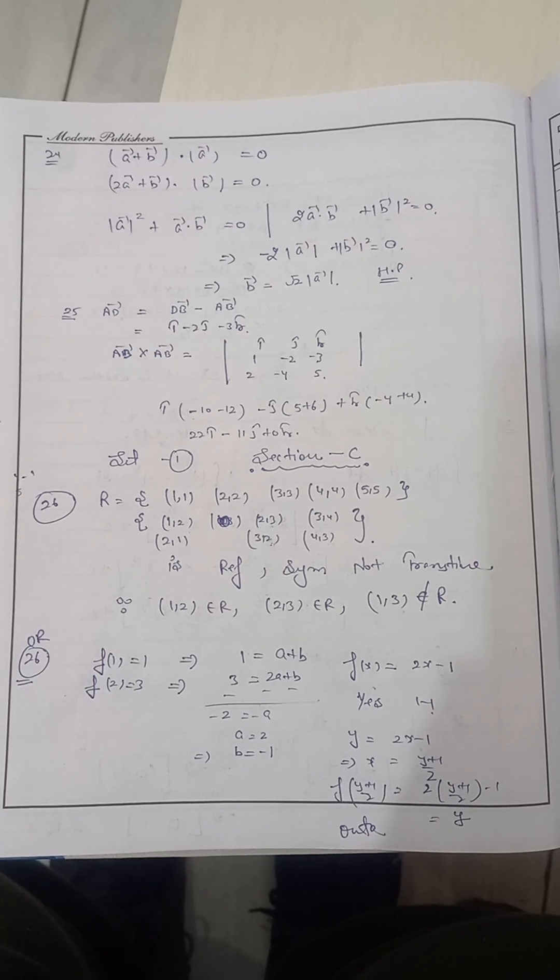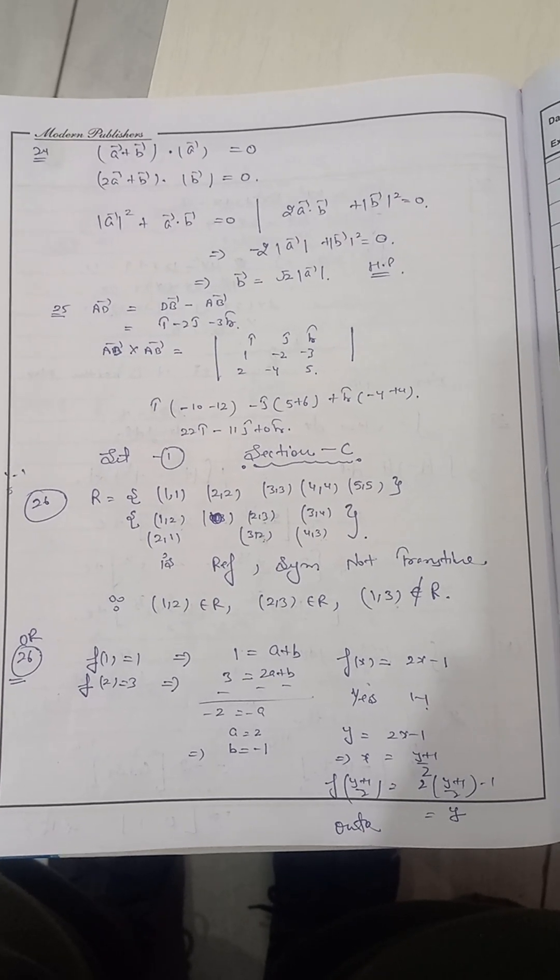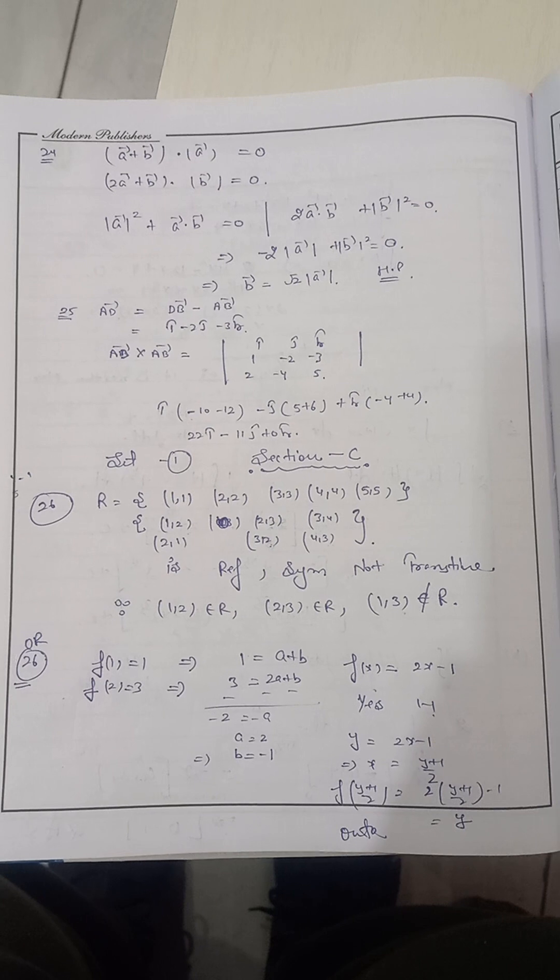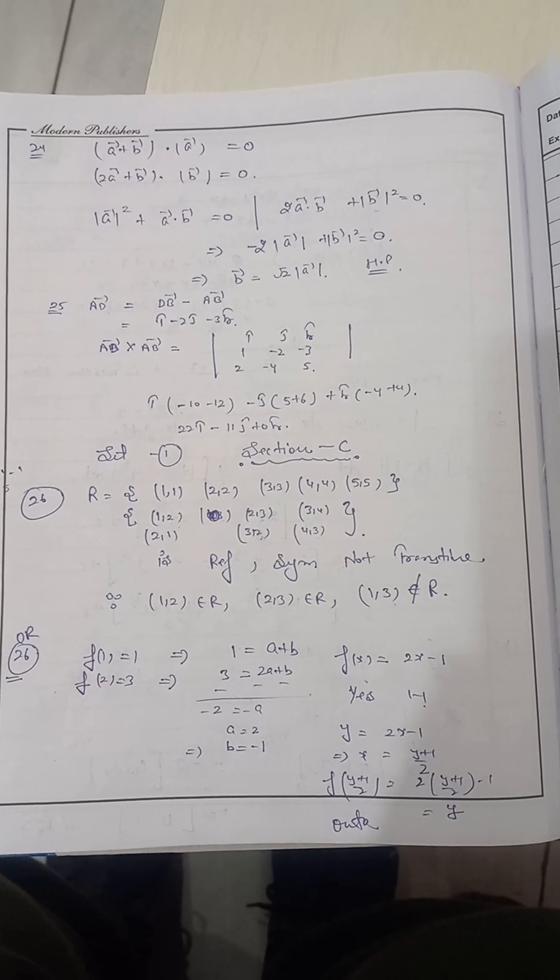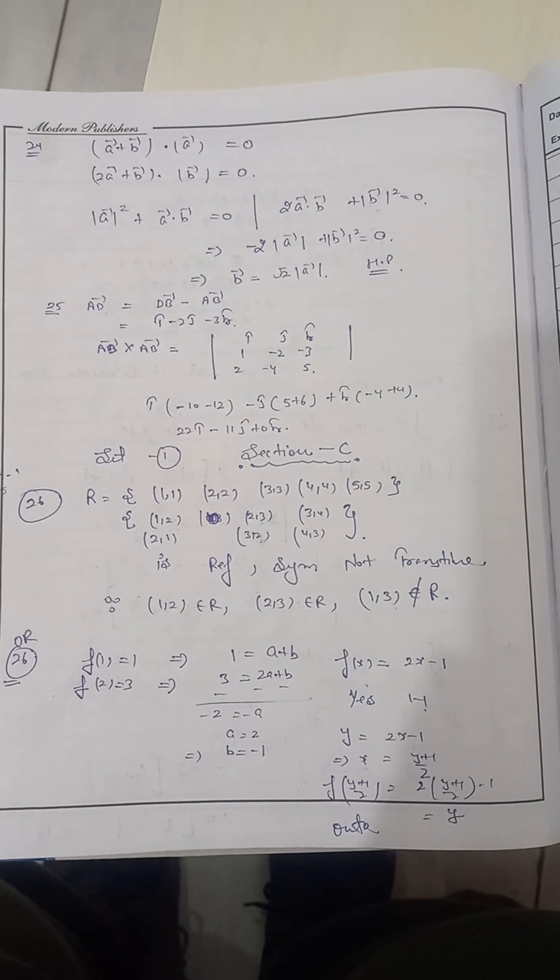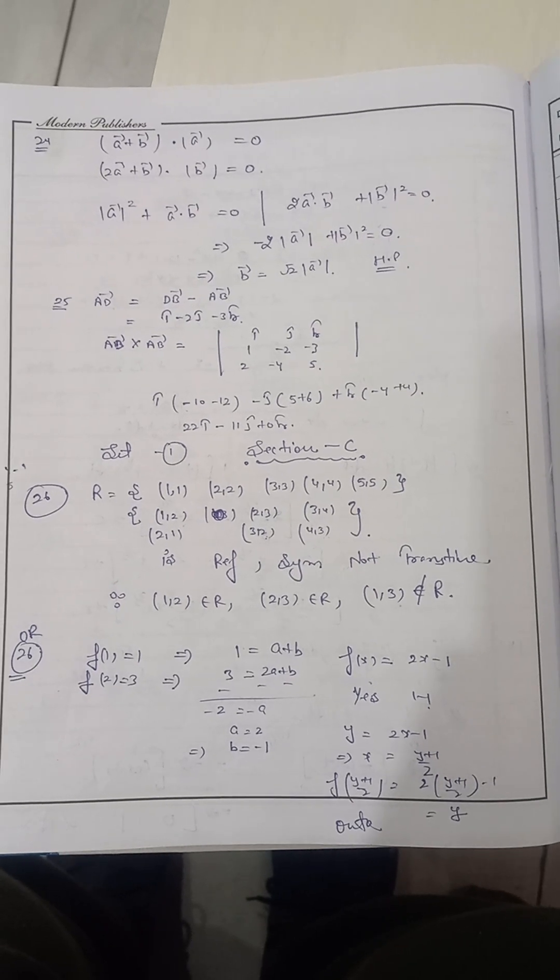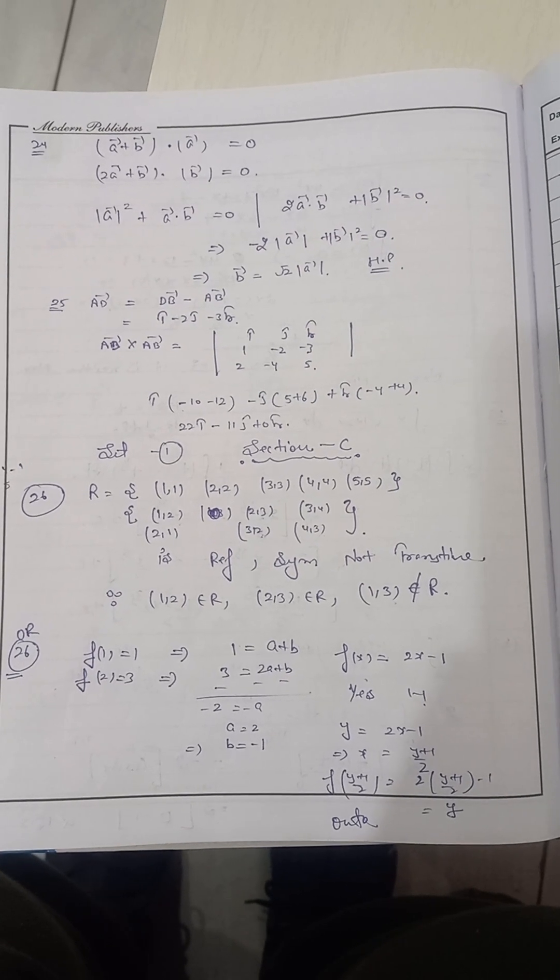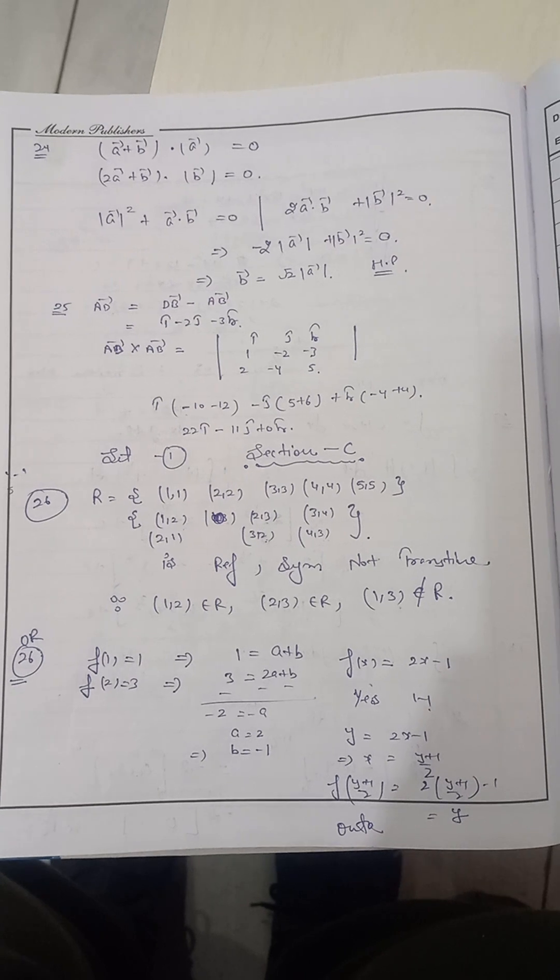Afterwards, it is OR part. OR part, they are saying that first we have to write down the function. After writing the function, we have to check that it is 11 on 2 or not. Yes, obviously its function. What about function y is equal to 2x minus 1. You can write fx, you can write y, both are in the same manner.